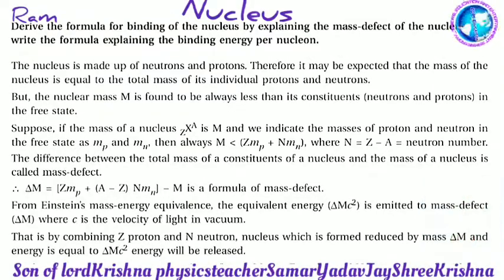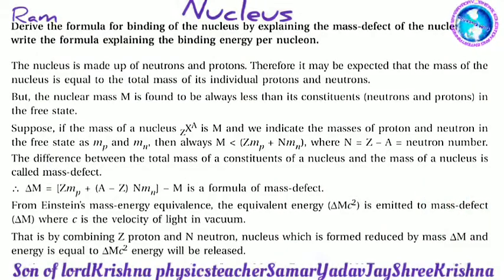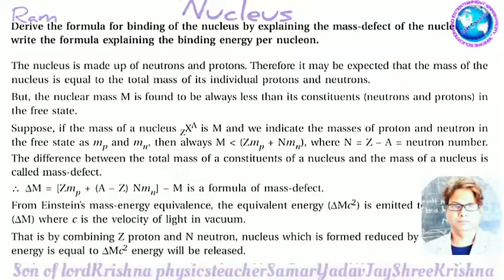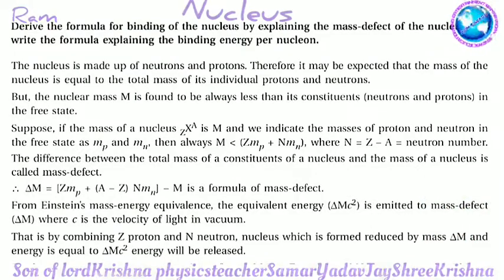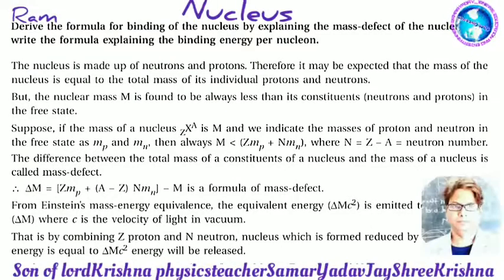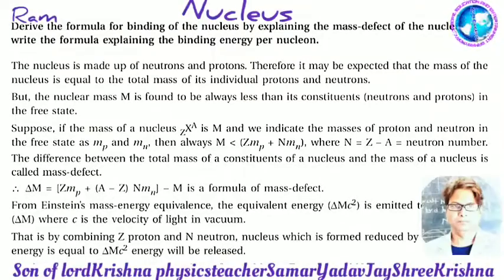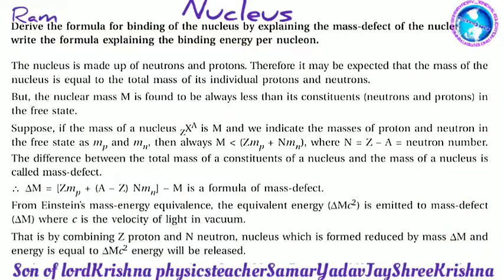Derive the formula for binding energy of a nucleus by explaining the mass defect, and write the formula for binding energy per nucleon. The nucleus is made of neutrons and protons. Therefore it may be expected that the mass of the nucleus equals the total mass of its individual protons and neutrons.